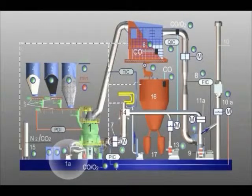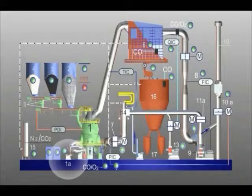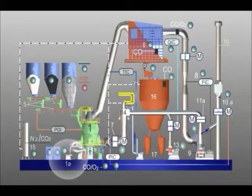The seal air fan at position 1a is switched on. The sealing air at the grinding table seal, the grinding rollers, and the classifier drive is needed in order to prevent dust from accumulating in the bearings.